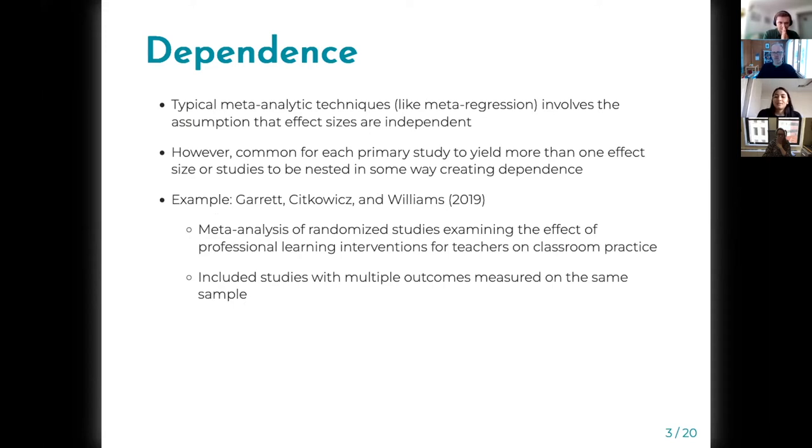An example of a dependent structure is in Garrett, Sitkowicz, and Williams 2019 paper. It's a meta-analysis of randomized studies examining the effect of professional learning interventions for teachers on classroom practice. This meta-analysis included primary studies with multiple outcomes measured on the same sample.